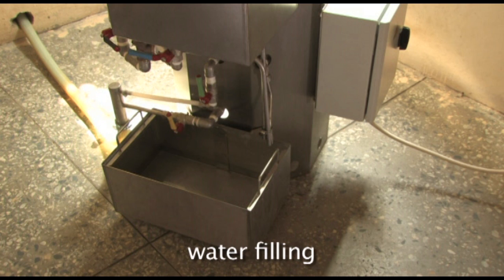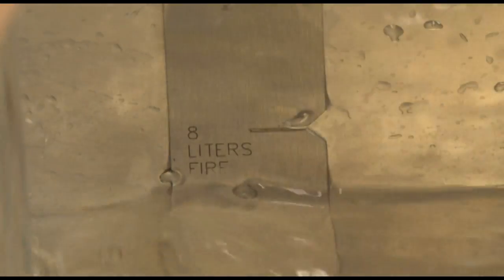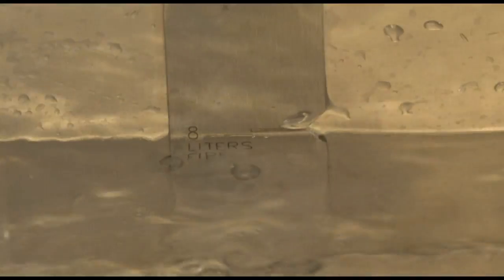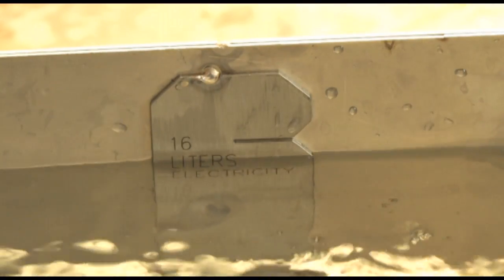You can use the bottom external tank which is detachable as a measure. It has two marking lines. The lower mark at 8 litres when heating with kerosene and an upper mark at 16 litres when heating with electricity.